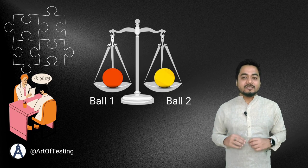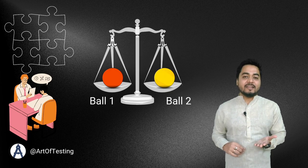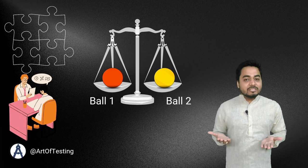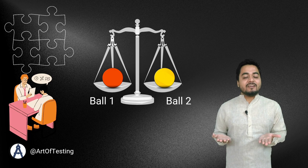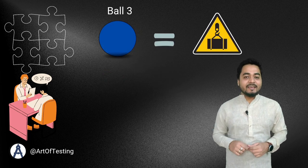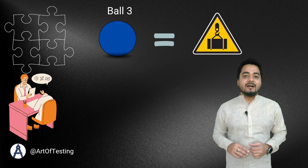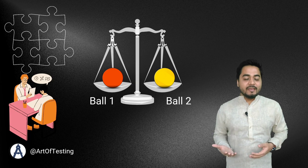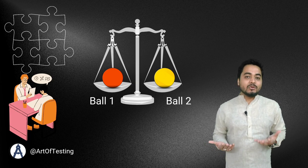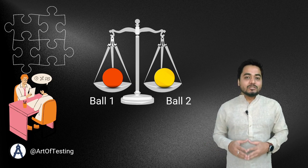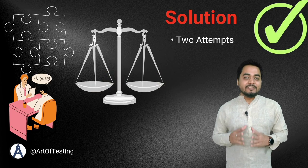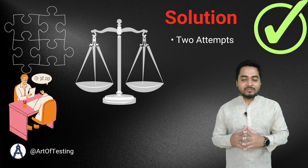Now, from those 3 balls, pick up 2 balls — put one on side 1 of the balance and another ball on side 2. If these 2 sides have equal weight, then the 3rd ball is the heavier ball. However, if either side 1 or side 2 is heavier, then you know which ball is heavier. So using 2 attempts, you are able to identify the odd ball out.